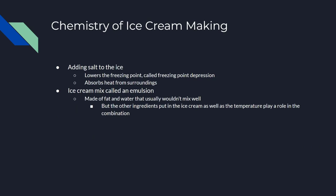Now I'm going to talk about the chemistry of making ice cream. So, adding salt to the ice — why do we add salt to the ice? When we add salt to the ice, it lowers the freezing point, and this is called freezing point depression. What this does is make the ice absorb heat from its surroundings, which in turn cools down the bag of cream or milk — the ice cream bag inside the larger bag.